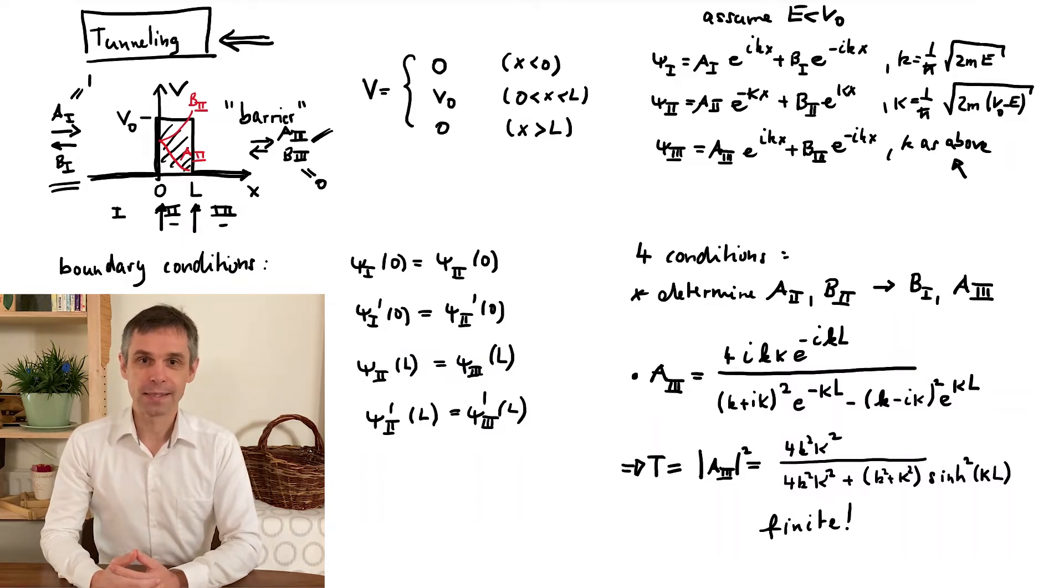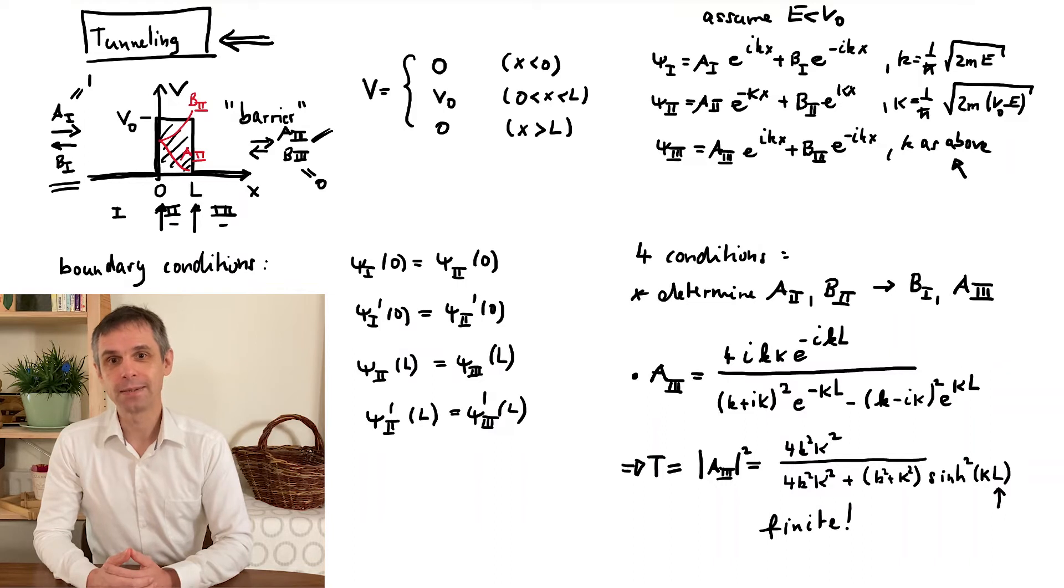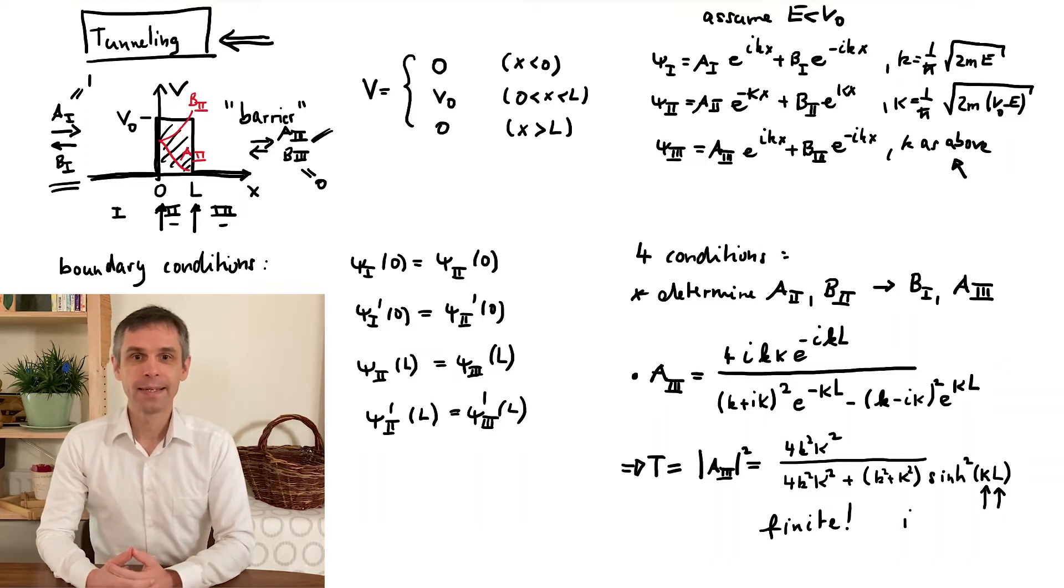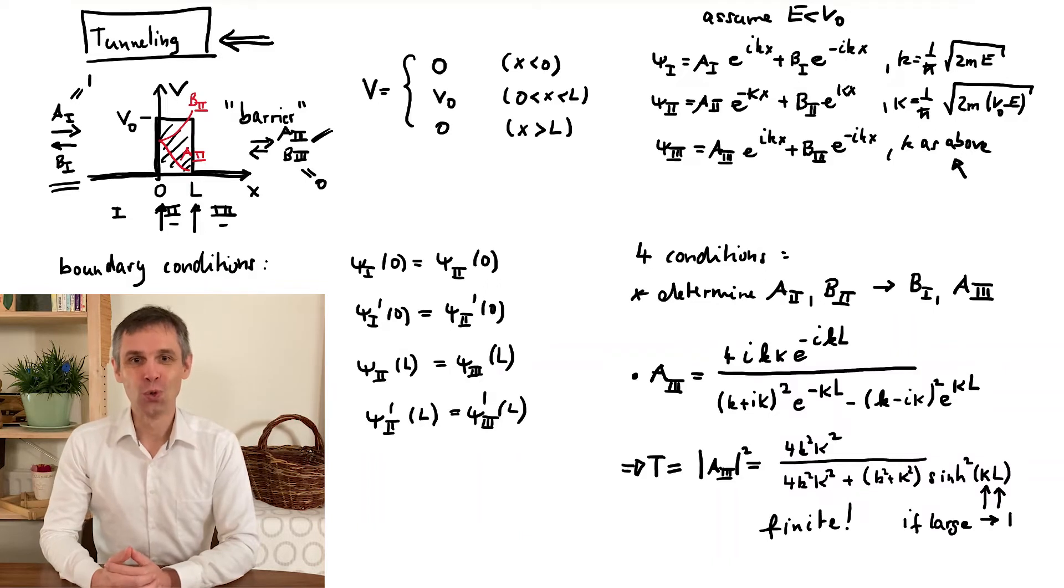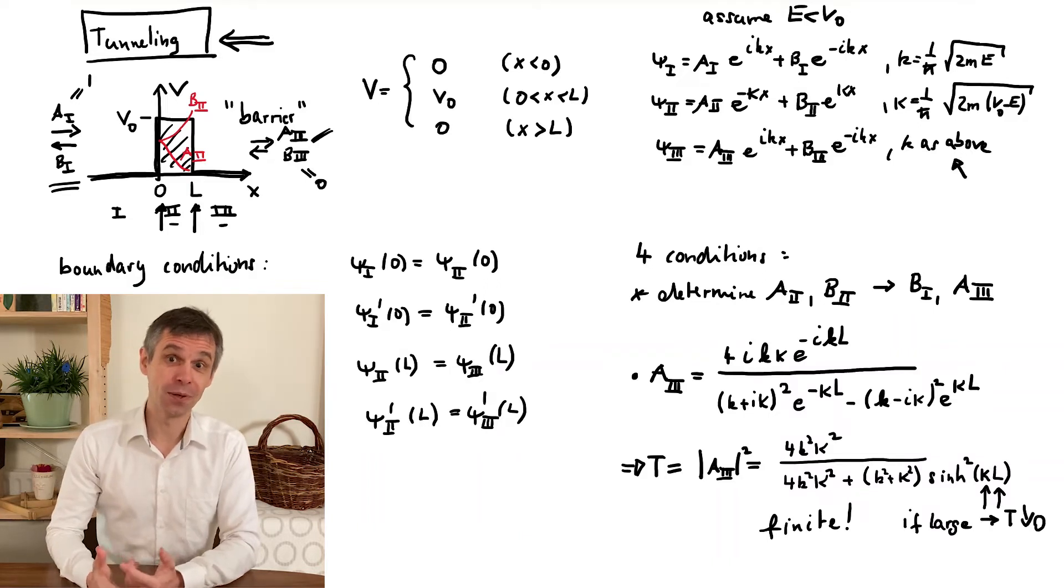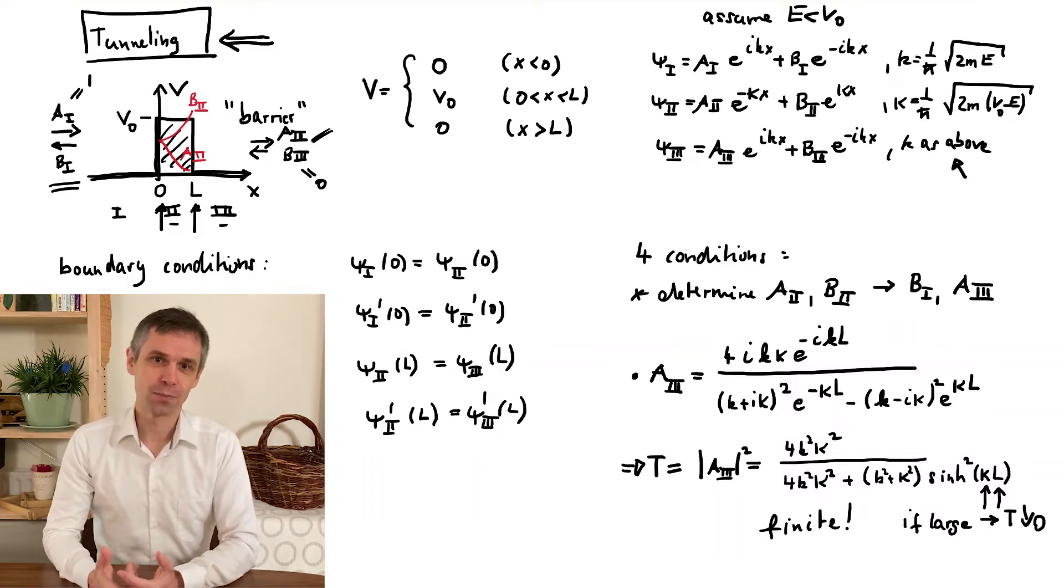The hyperbolic sine that appears in the denominator can be made very large by increasing L or kappa, and then the transmission probability becomes very small. So tunneling is rare through a very long barrier.